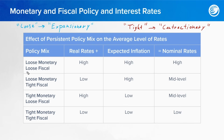Then there is loose fiscal policy. Fiscal has to do more with the government and government spending and taxation. So loose fiscal policy would be the government providing an economic boost — either by reducing taxes or raising government spending. Tight fiscal policy would be the opposite: taking some steam off the economy by increasing tax rates or decreasing government spending.